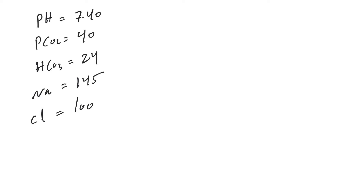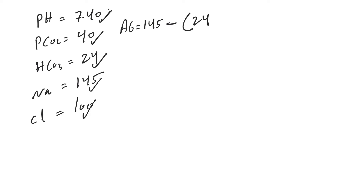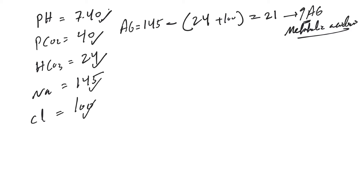The second example: pH 7.4, PCO2 40, bicarb 24, sodium 145, chloride 100. Most of it looks pretty normal. When we see a normal pH, we immediately jump to the anion gap. The anion gap here is 145 minus bicarb 24 plus 100, which equals 21. There is an increased anion gap — and when the anion gap is increased, especially above 20, there is increased anion gap metabolic acidosis regardless of the pH.